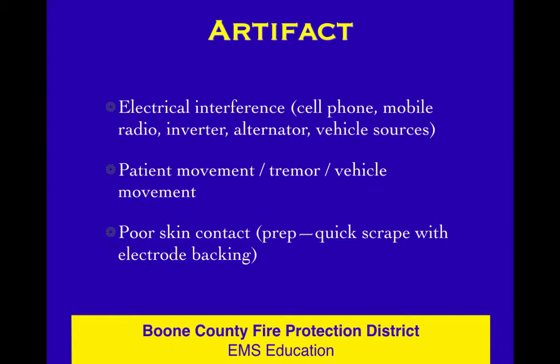Any kind of electrical interference, which is everywhere in an ambulance — your cell phone, the truck's cell phone, the patient's cell phone, the mobile radio, whether it's transmitting or receiving. There's something called an inverter, which takes the electricity coming off your alternator at 12 volts and turns it into 110 volts like in your house. So there's electrical stuff going on in an ambulance, plus the engine and all the computers that run the vehicle itself. There's a bunch of electrical interference.